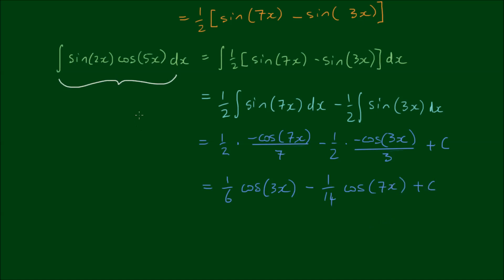All right, so copying down the integral. The integral of sine of 2x by the cosine of 5x with respect to x, the indefinite integral is 1 sixths of the cosine of 3x minus 1 fourteenths of the cosine of 7x plus C.